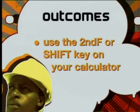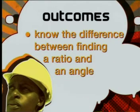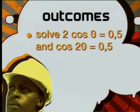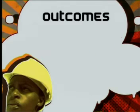By the end of this lesson, you will be able to use the second function or shift key on your calculator, know the difference between finding a ratio and finding an angle, and know the difference in method needed to solve trig equations such as 2 cos theta equals 0.5, and cos 2 theta equals 0.5. Let's go and see what Wesley and Hayley have been getting up to.